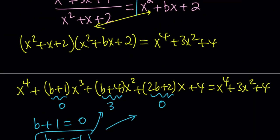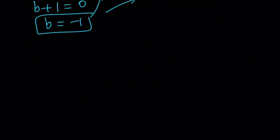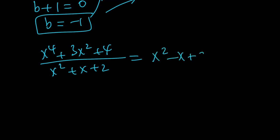Because this is what we were looking for. So when you divide x to the 4th plus 3x squared plus 4 by x squared plus x plus 2, that gives you x squared minus x plus 2. Because b is negative 1, the coefficient of x. Make sense? Hopefully it does.